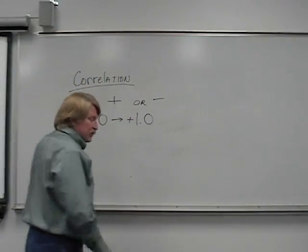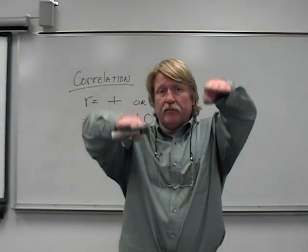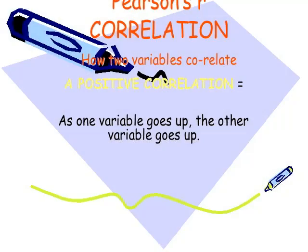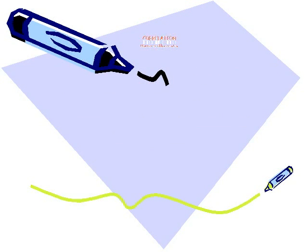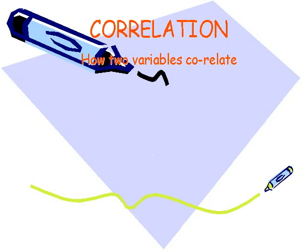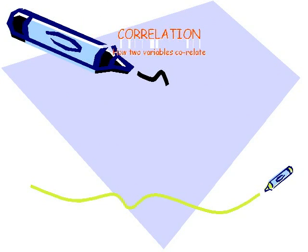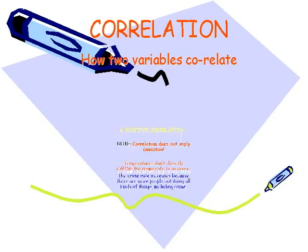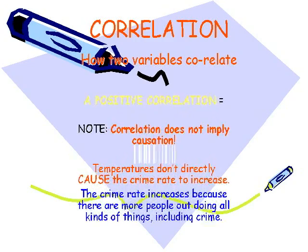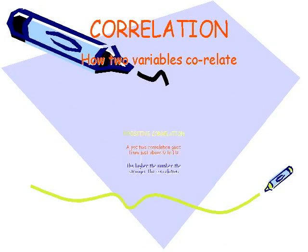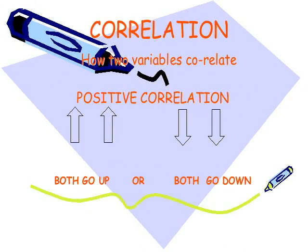A positive correlation means as variable A goes up, variable B goes up at the exact same rate. We're going to find rarely perfect ones, negative or positive. We're going to find numbers in between and we need to know how to interpret those numbers. A correlation just shows a relationship between two variables — it doesn't say one caused the other. When you get a Pearson's R value you'll know how to interpret it.